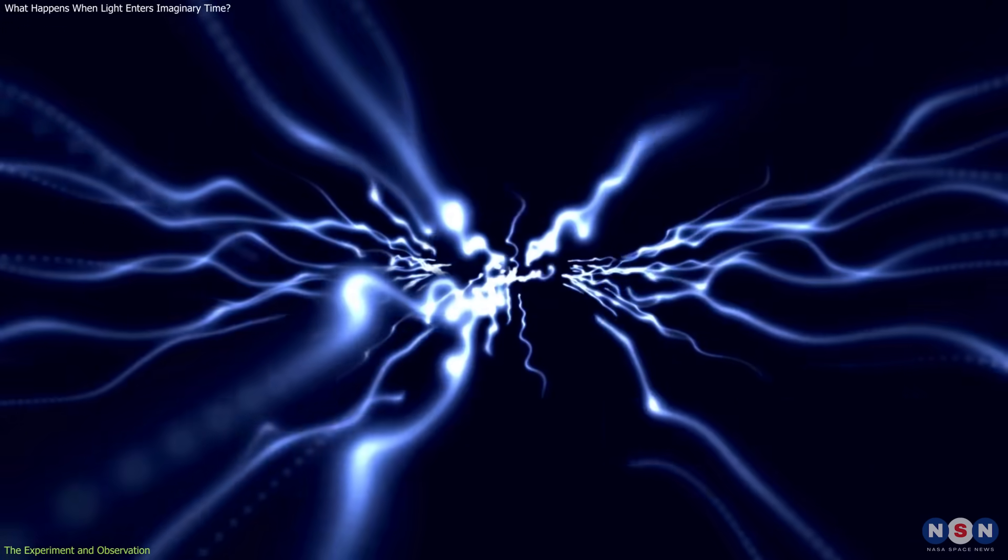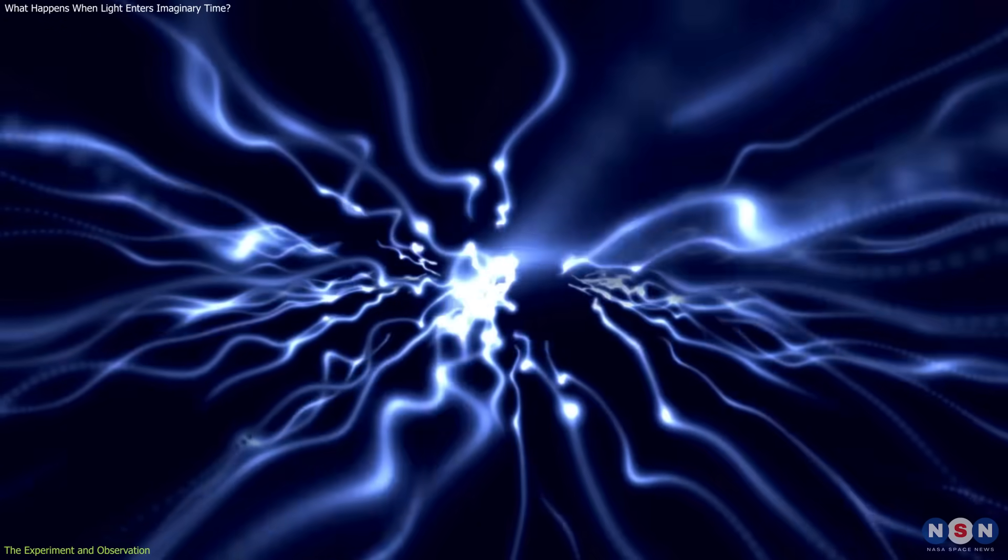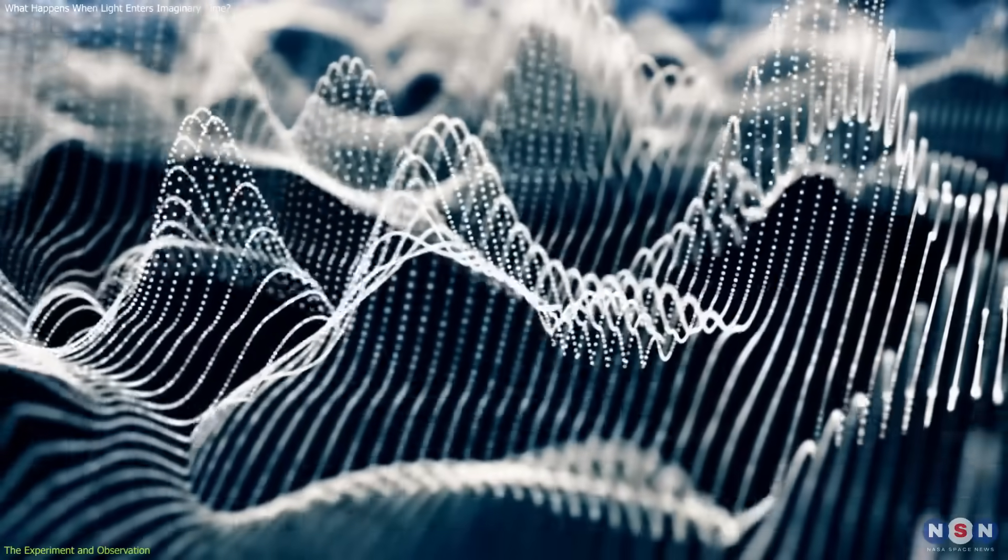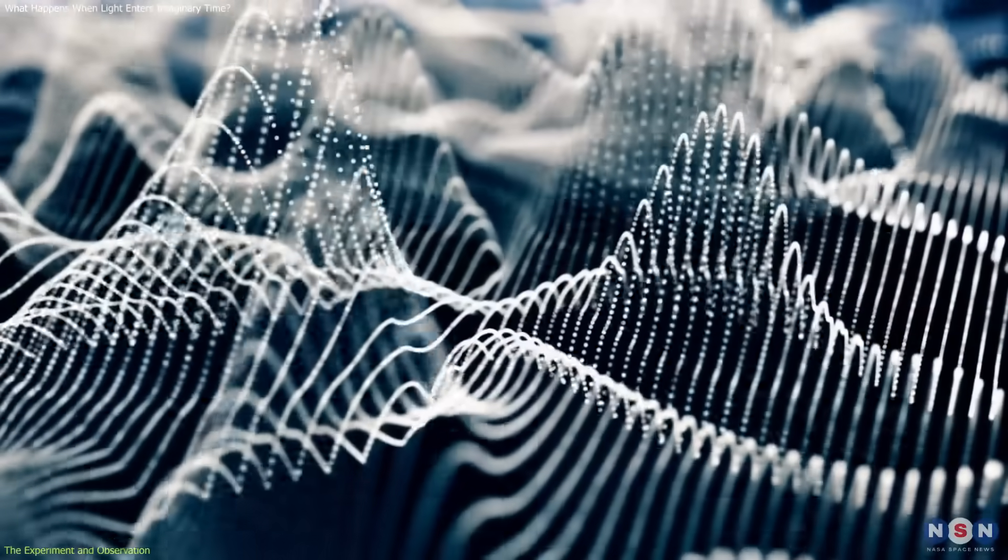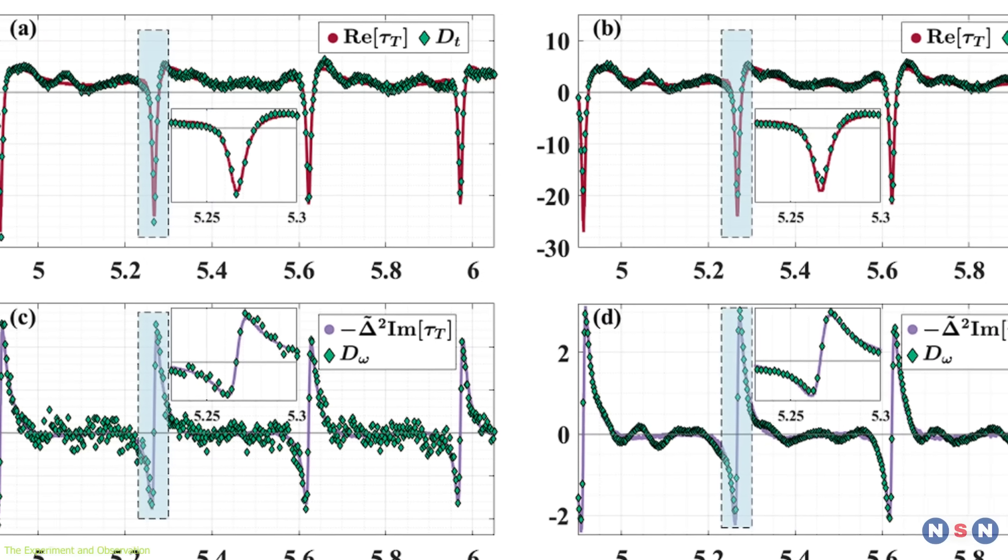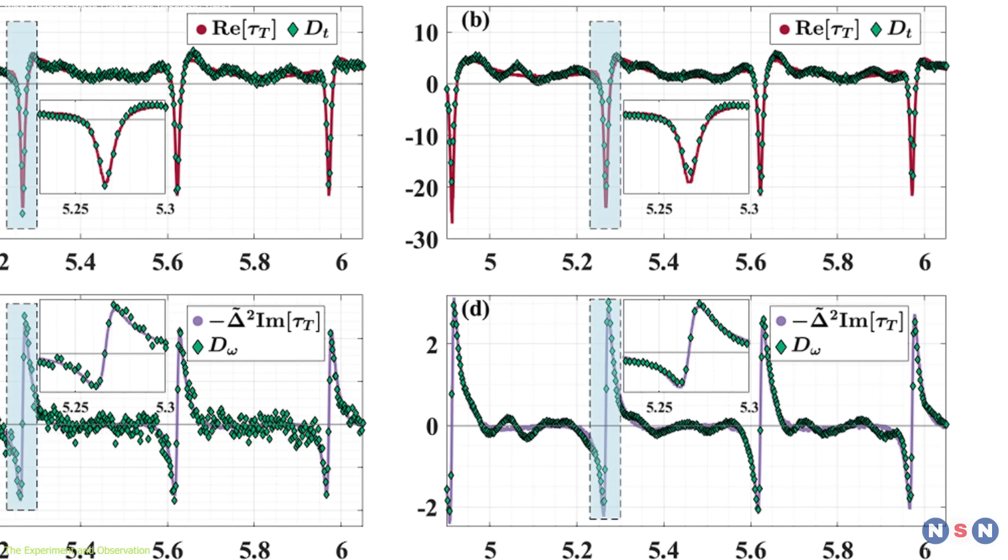Microwaves are a type of light outside the visible spectrum, ideal for controlled measurement. As the waves traveled through the loop, they encountered both resistance and phase interference, normal effects in a medium.